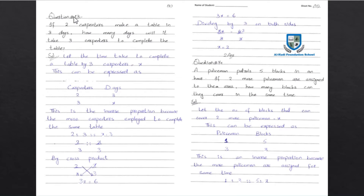Next, question number 13: If two carpenters make a table in three days, how many days will it take three carpenters to complete the same table? Obviously they will take fewer days because more carpenters are working. If it took 3 days before, it will take less time now.